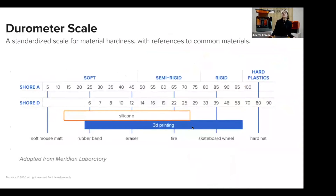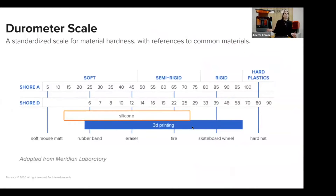Just a quick slide on the durometer scale — that is a standard for showing the different hardness of silicone. We're going to talk about a few different silicones here. You can see it ranges from a very soft material to very hard material.